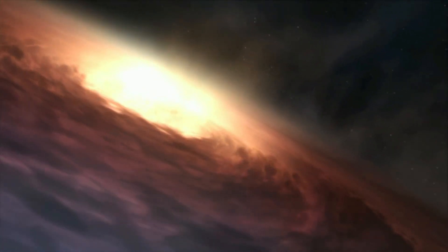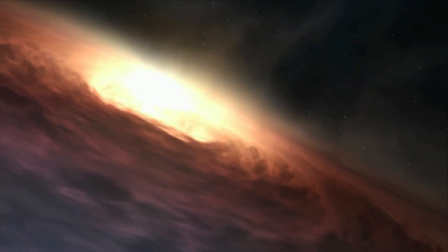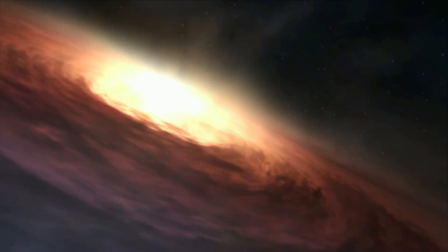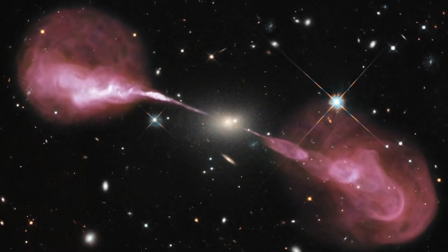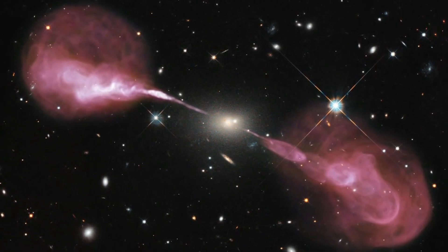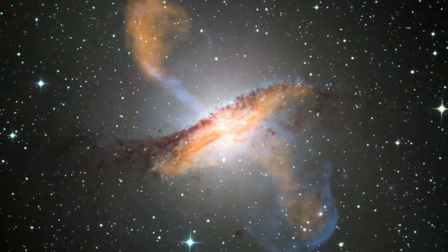Another way that black holes form is from the direct collapse of gas, a process that is expected to result in more massive black holes with a mass ranging from 1,000 times the mass of the Sun up to even 100,000 times the mass of the Sun. This channel circumvents the formation of the traditional star and is believed to operate in the early universe and produce more massive black hole seeds.